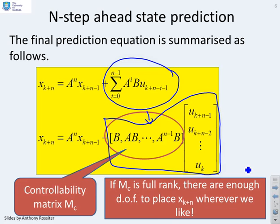Here you'll see you're going to get exactly the same insight. If this matrix is full rank, then there's enough degrees of freedom in your choices of input u, so that you can place xk plus n wherever you like. The same controllability test used for continuous time works for discrete time, even though the derivation is somewhat different.